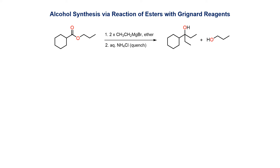One of the most versatile ways to make a carbon-carbon bond is to employ an organometallic Grignard reagent. This starts with an organic halide being treated with magnesium metal, which react together to give the Grignard species. An aldehyde or a ketone is then added, with the Grignard nucleophile attacking the carbonyl carbon. The resultant alkoxide is then quenched, and an alcohol product is the result.